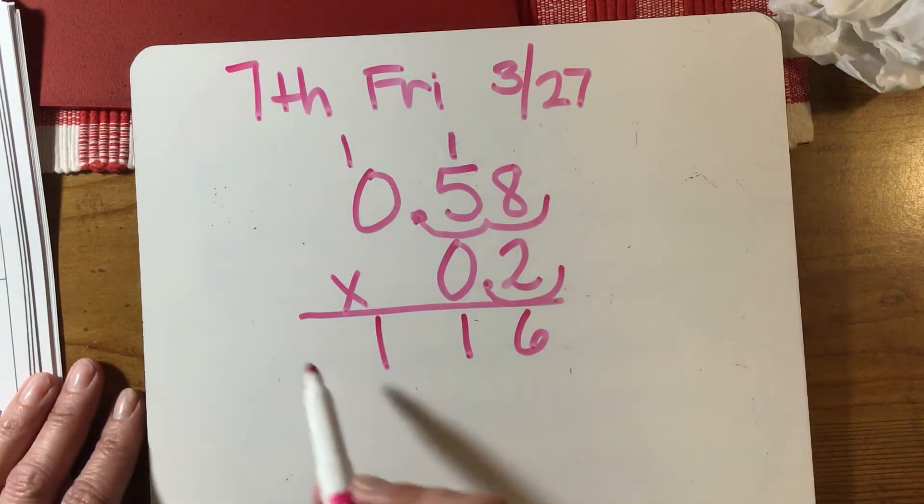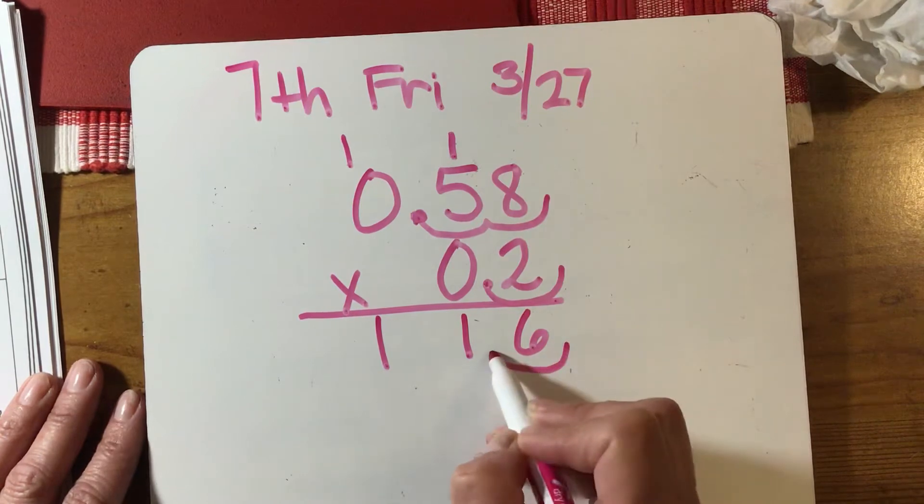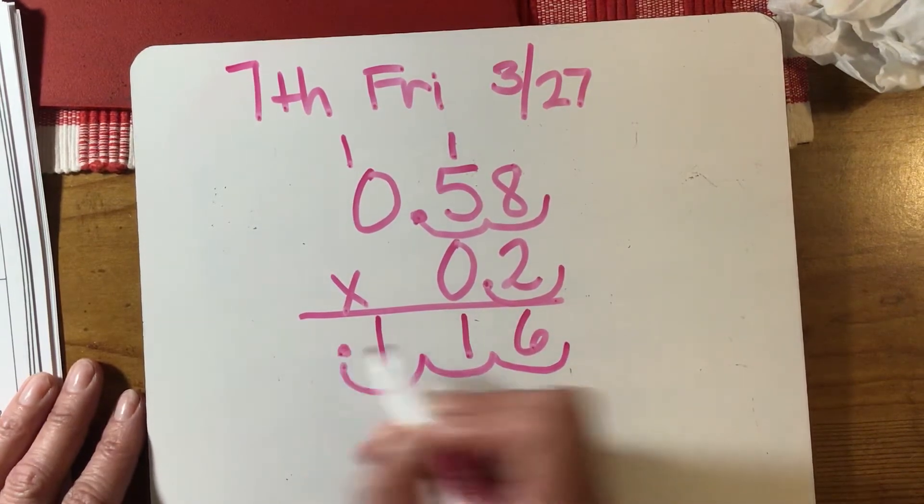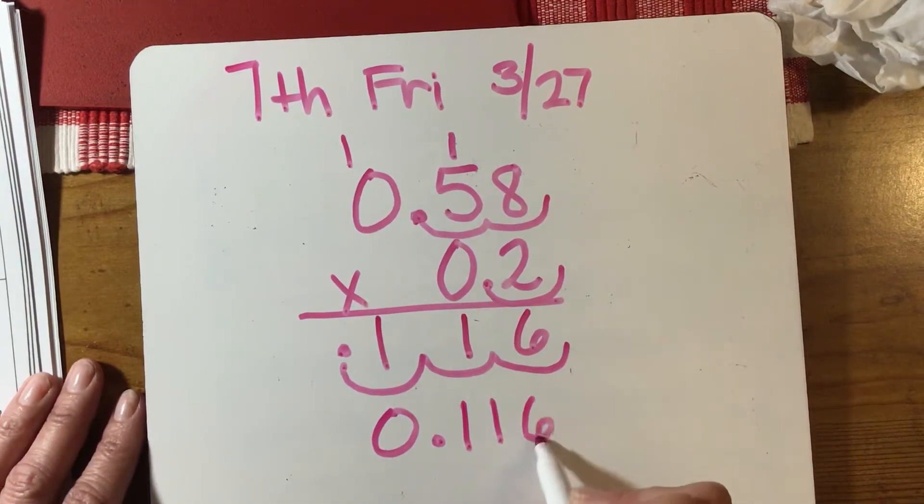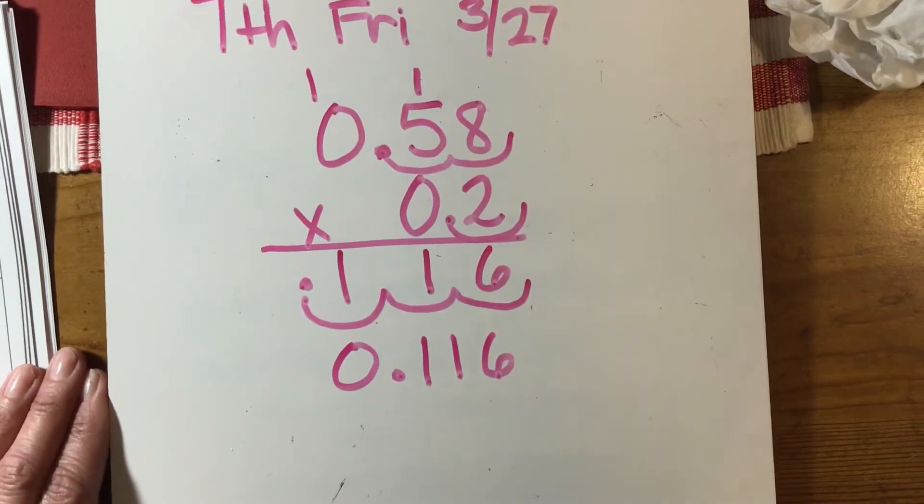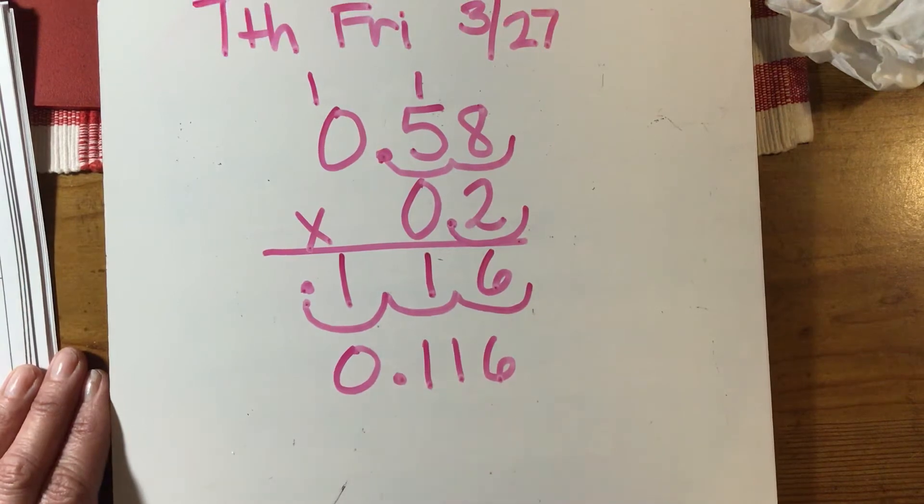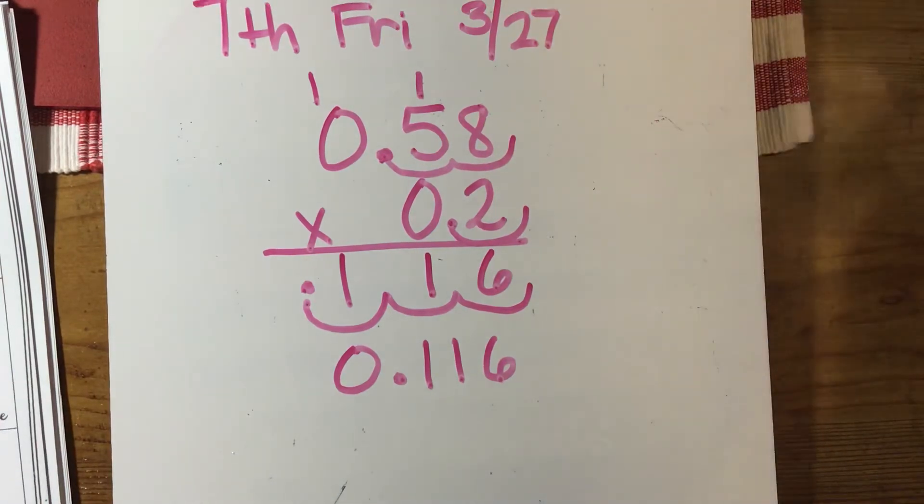There's an imaginary decimal after every number, so because I have to move it three places up here, I have to move three places in my answer. If I have an imaginary decimal here—one, two, and three—it's going to be placed right there. So your answer is 0.116, which is one hundred sixteen thousandths. Try to get in the habit of putting the zero in front of the decimal. It helps you out later on when you do more operations with decimals.